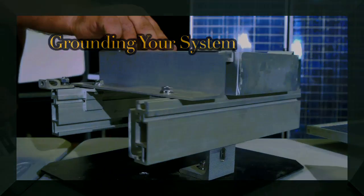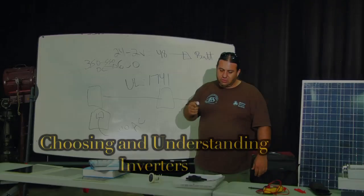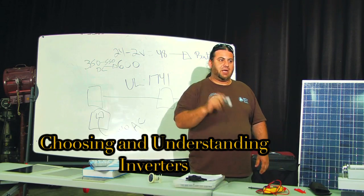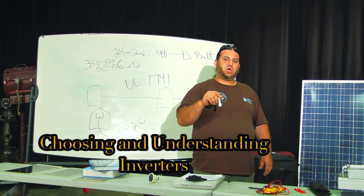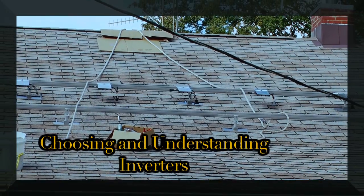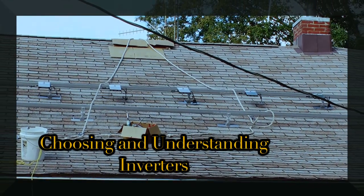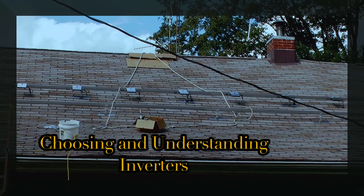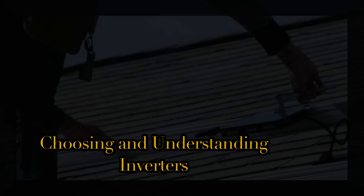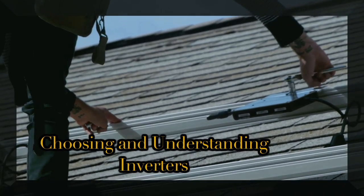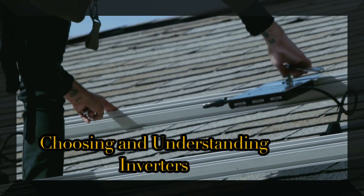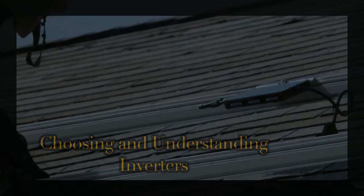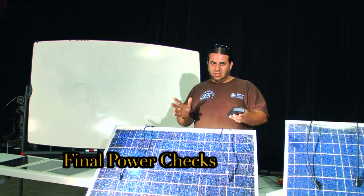The primary advantage of a micro inverter is if you want to start small. If you want to put one, three, five solar modules up, you can. It makes it very modular. You can just add more as you can afford it or as you want to. So the accurate way to do it is...